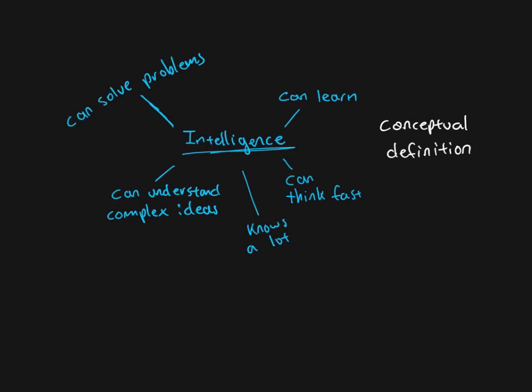So in the last video, we were talking about the idea of a conceptual definition, just meaning when we go to design our study, once we have our hypothesis in hand and we know what variables we're going to look at, we have to give a clear definition of those variables. Tell the reader, tell other scientists, what is it we mean when we say something like intelligence?